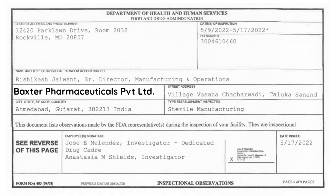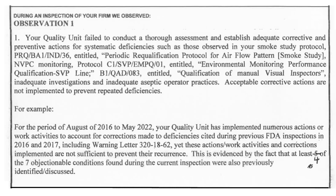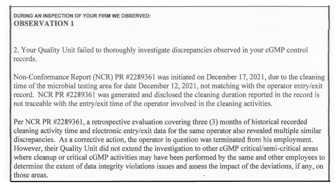Let us go through the details of Baxter Pharma's 483 observations one by one. Observation number one: the responsibilities and procedures applicable to the quality control unit were not followed fully. Under this observation, auditors stated that the firm's quality unit failed to conduct a thorough assessment and establish adequate CAPA for the identified discrepancies. This was noted because four out of seven observations were repeated.